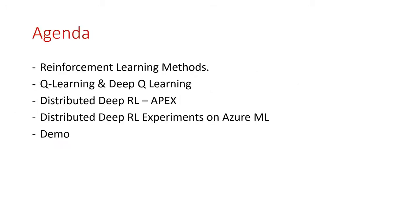The agenda of this session is to walk you through different reinforcement learning methods — Q-learning and deep Q-learning fundamentals and problems associated with them — how distributed deep RL architectures like Apex solve the problems associated with single machine training, and how to create an environment for conducting such experiments using distributed deep RL on Azure ML using Ray. Finally, I'll give you a code walkthrough of a complete environment and an experiment created using distributed RL on Azure ML using custom gym environments.